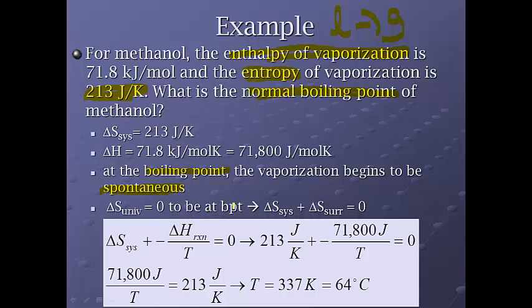So, we need our delta S of the universe equal to be zero. So, at the boiling point, we take the delta S of the system plus the delta S of the surroundings has to be equal to zero. So, here's where we substitute the reaction. This time, we're just going to set it equal to zero because we're just trying to figure out what the boiling point actually is. Plug in our 213, plug in our 71,800, we end up with 337 Kelvin or 64 degrees Celsius for the boiling point. You also have one more example on page 793, 16.4, and we will pick up with the rest of entropy. Thank you.